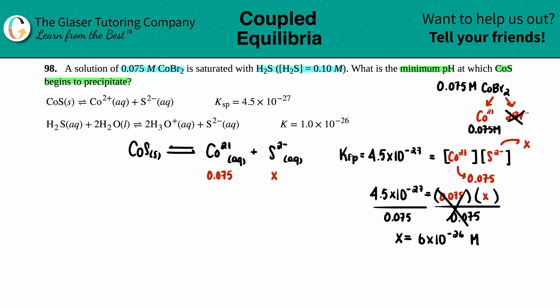We get x equals 4.5 times 10 to the negative 27 divided by 0.075, which gives me 6 times 10 to the negative 26 molarity. That's the sulfide ion concentration, 6 times 10 to the negative 26. How is this going to help me? I already used this equation. If I look in here, I found the missing link. The S2- gets transferred to the second equation.